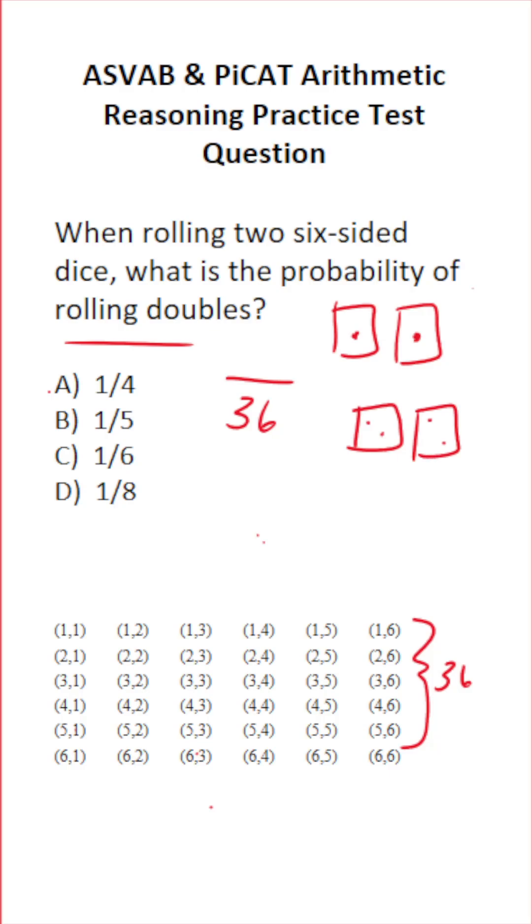How many times do pairs or doubles appear? Well, we have 1-1, 2-2, 3-3, 4-4, 5-5, 6-6.